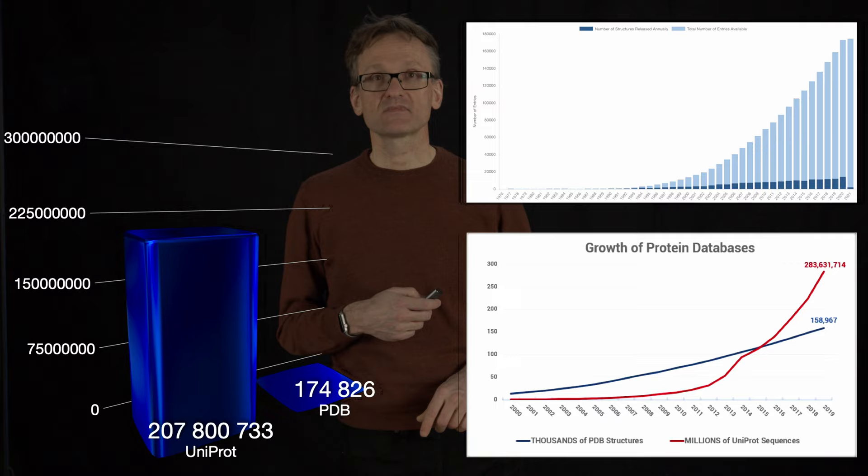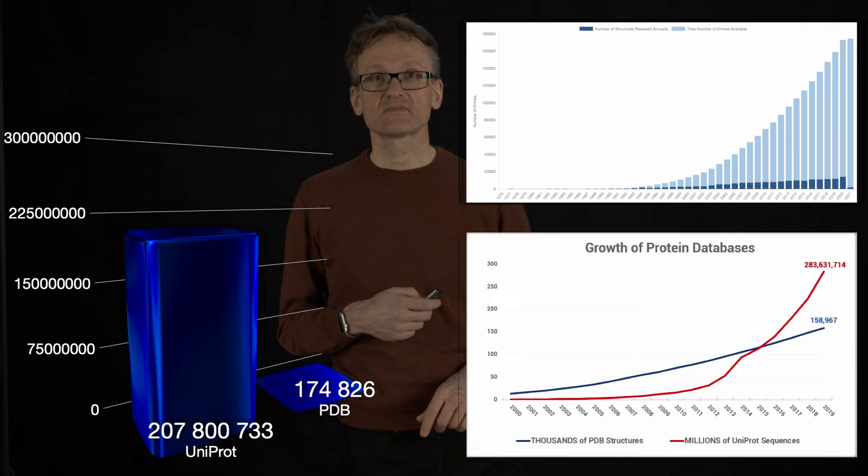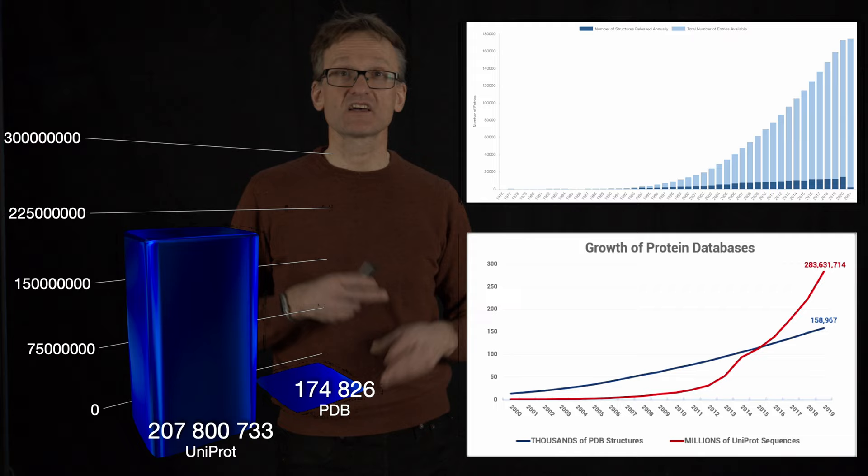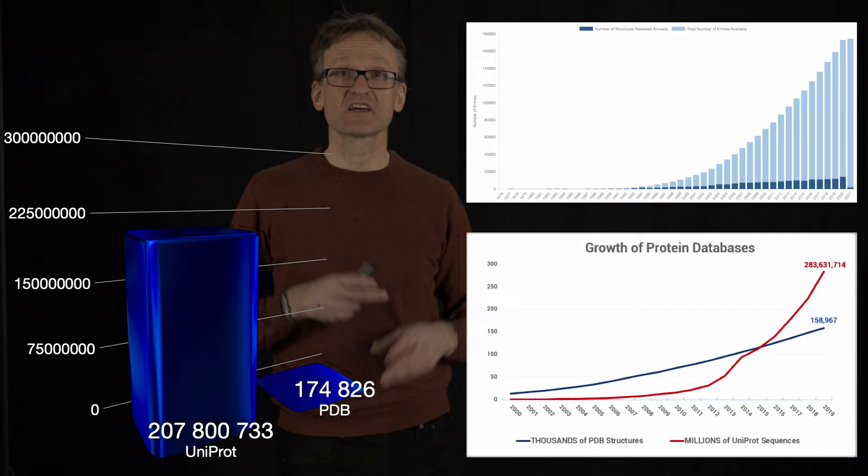It's even more impressive if we compare the growth of PDB to the growth of UniProt. And this is a logarithmic plot, I think. Do you see that the red UniProt line there compared to the blue PDB is not even in competition? So here again, I'm comparing structures versus millions of sequences, because otherwise it wouldn't work.